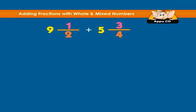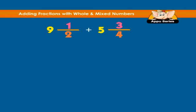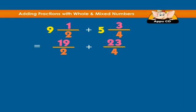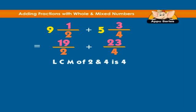Example: nine and a half plus five three-fourths equals how much? Converting each number to an improper fraction, we have nine and a half equals nineteen over two, and five three-fourths equals twenty-three over four. To calculate nineteen over two plus twenty-three over four, we have to find the LCM. The LCM of two and four is four.